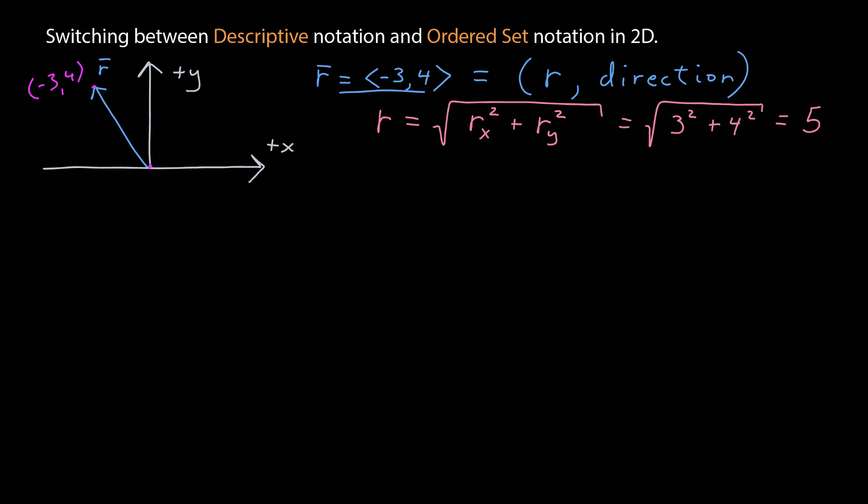We can see where that comes from by noting that because the point is at negative 3, 4, I can draw straight lines to each axis and there's negative 3 on the x and positive 4 on the y. I can use this to make a right triangle. And I can use the Pythagorean theorem to relate the lengths of the sides of this triangle. The length of this side is 3. The length of this side is 4, which means the length of the hypotenuse is 5.